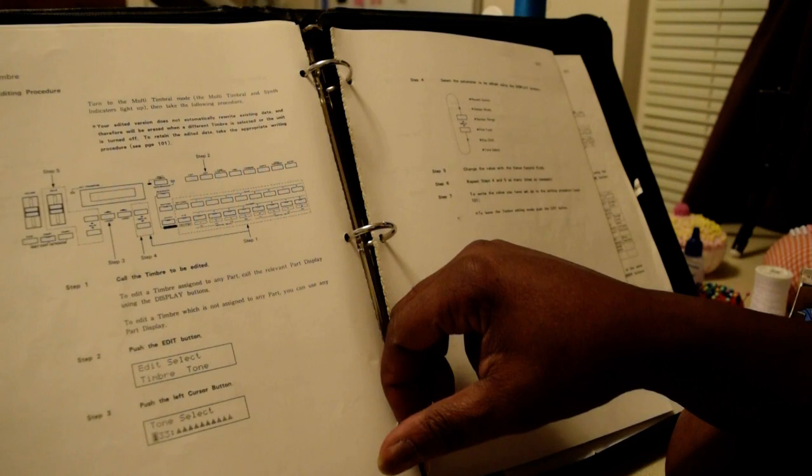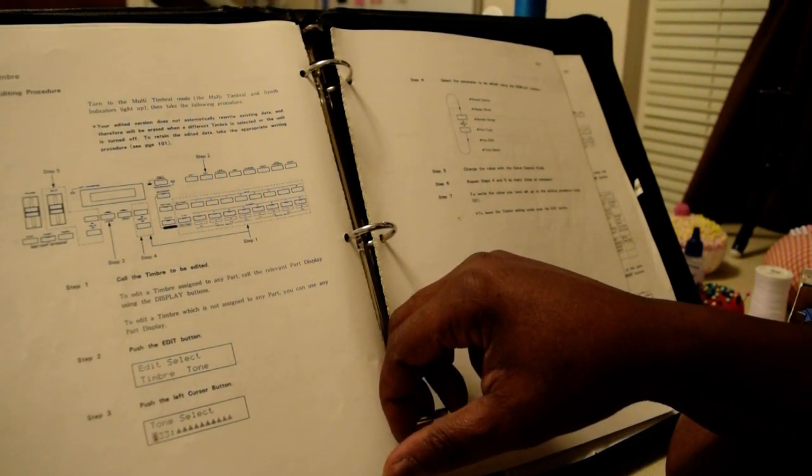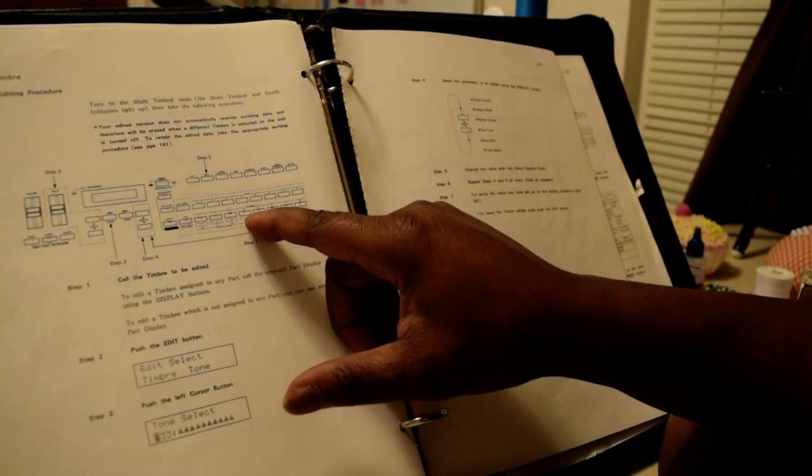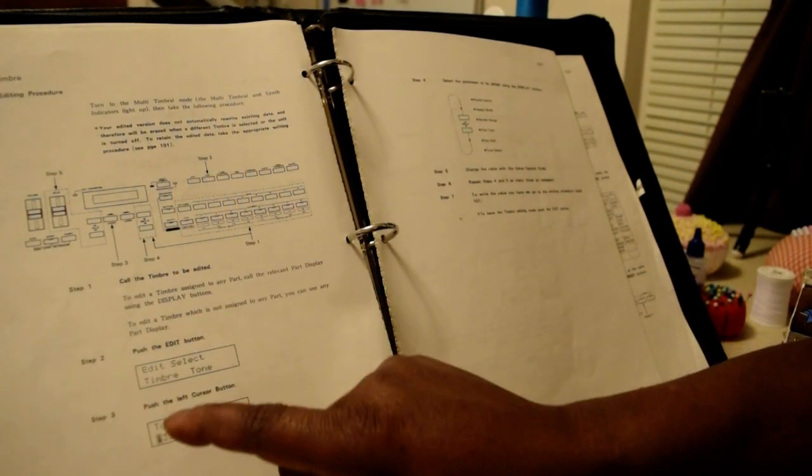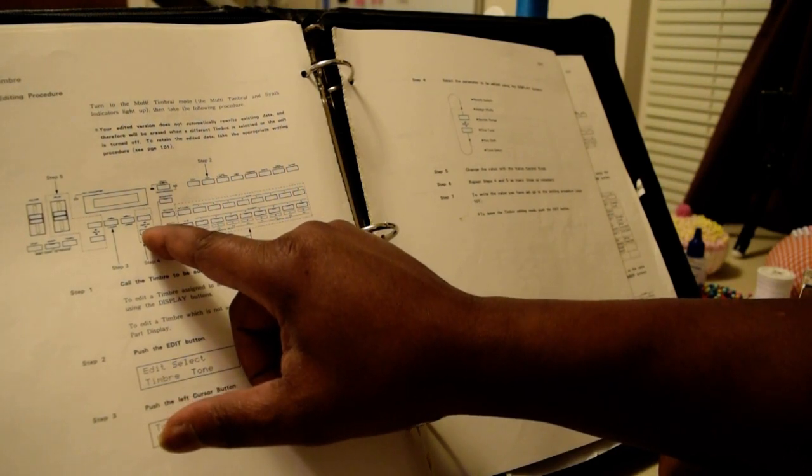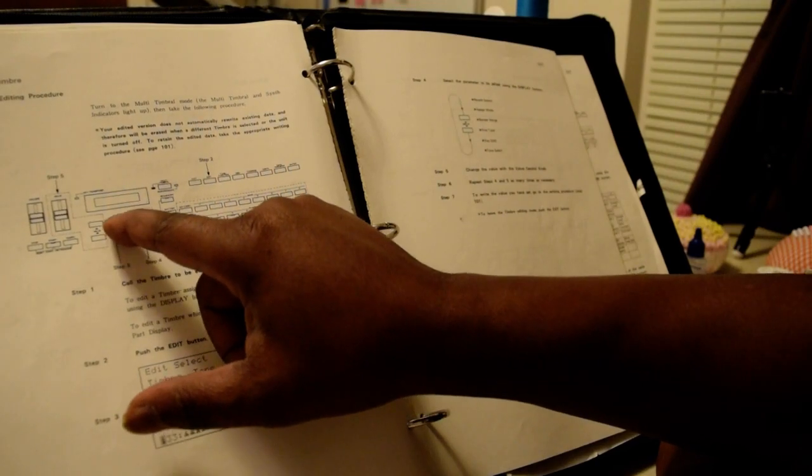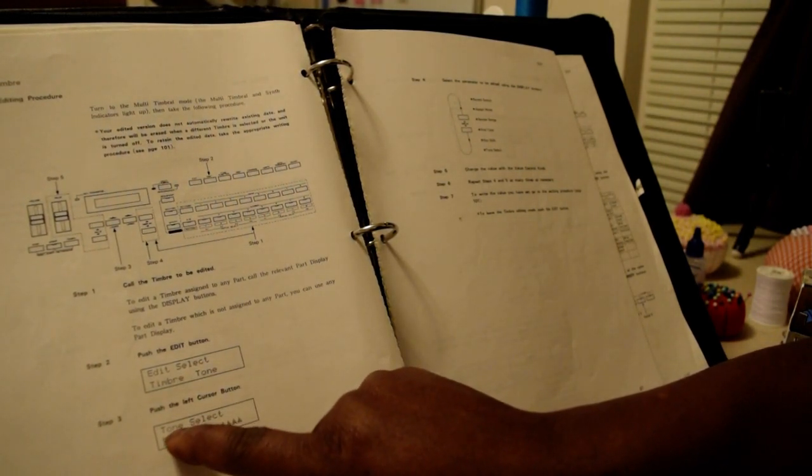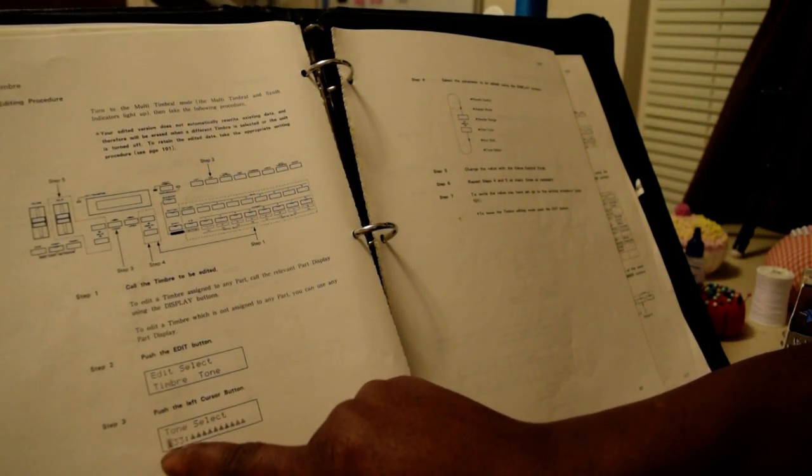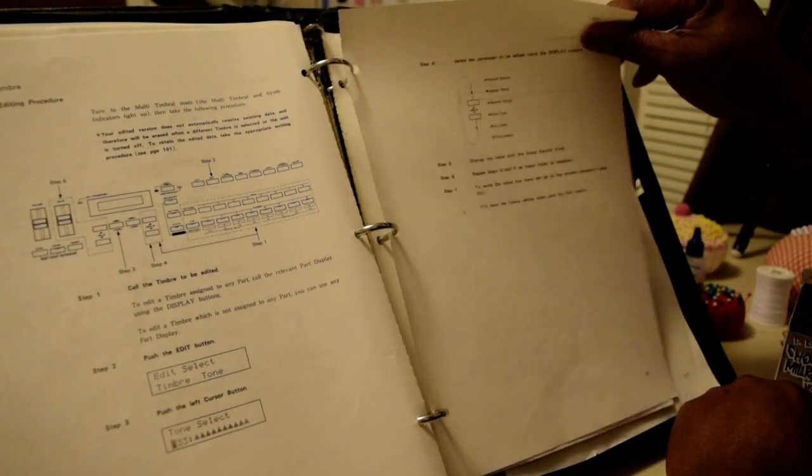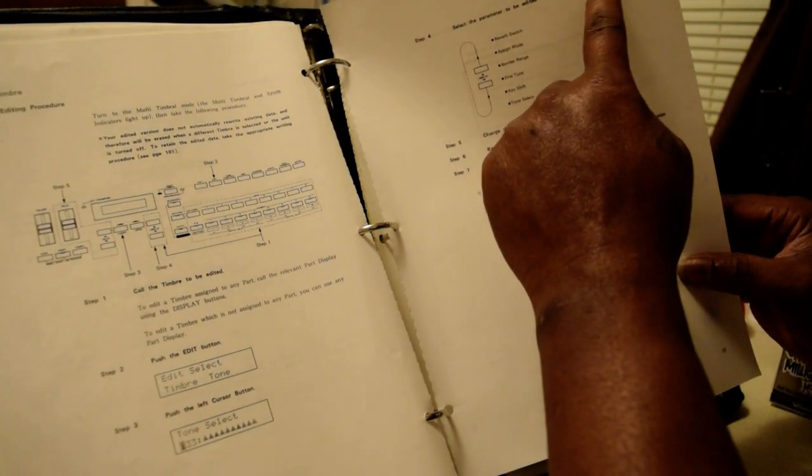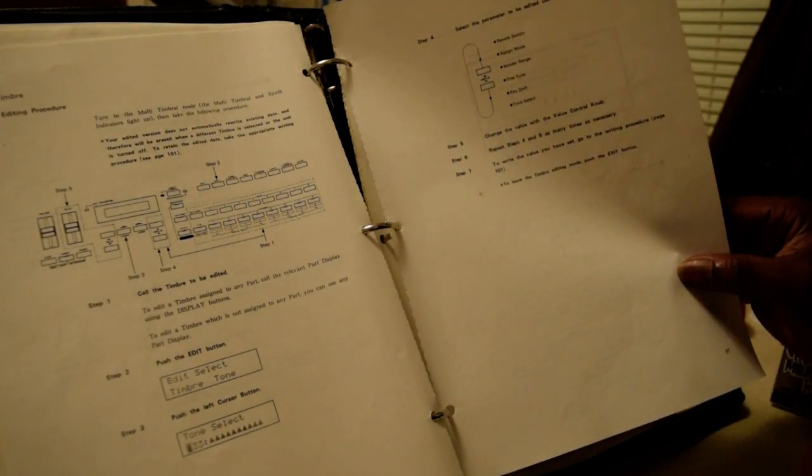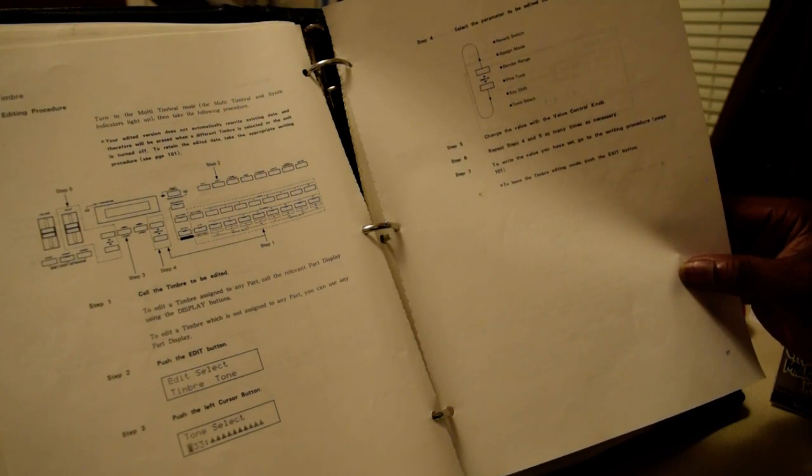The following editing procedure: turn to the multi-temporal mode. The multi-temporal and synth indicators light up. Then take the following procedure. Number one, it says here go to number four, then hit edit. And once you do that, of course you do got to use these buttons here, the display up, down, and use these right here sometimes. And then what will come up is this timbre, tone. And this right here says tone select, but it says I-33, which is meaning internal number 33. And then right here it says select the parameter to be edited using the display buttons, which was right here. Then that's when you hit reverb switch, assign mode, bender range, fine tune, key shift, and tone select.